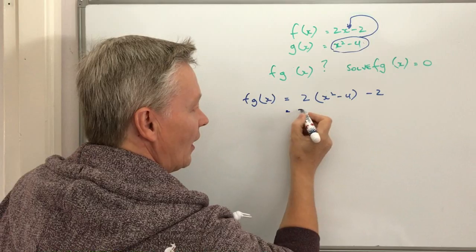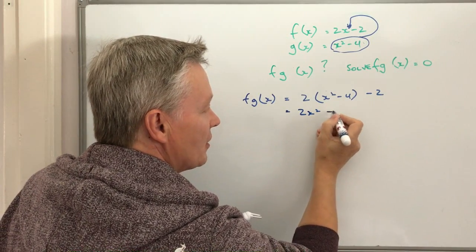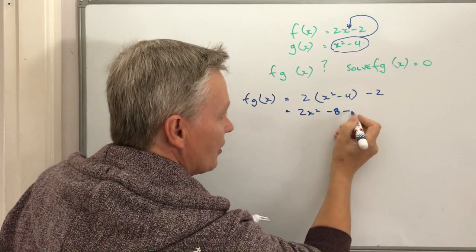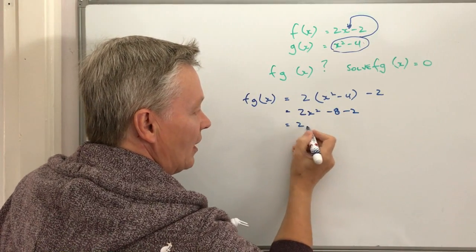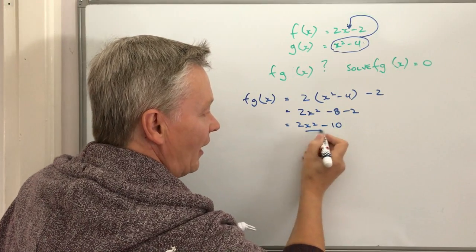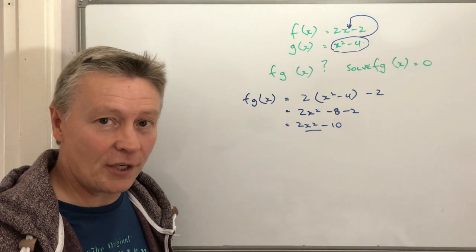So 2 times x squared is 2x squared, and 2 times minus 4 is going to be minus 8, and then I've got minus 2 here. So that will just simplify out as 2x squared minus 10. And that would be perfectly fine to answer the first part of this question.